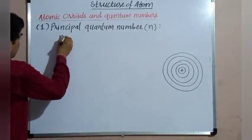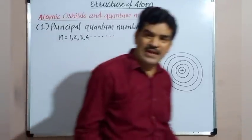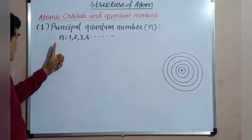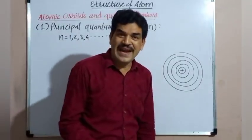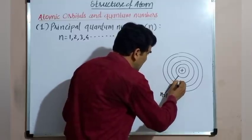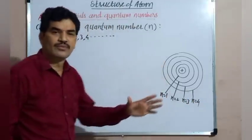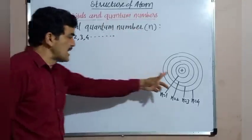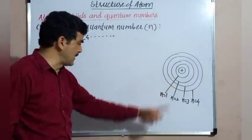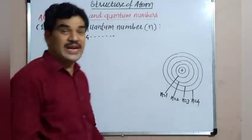The principal quantum number n has integer values: 1, 2, 3, 4, and so on. These are the values of the principal quantum number. When n = 1, that orbit is the first orbit or first shell. For the first shell n = 1, for the second shell n = 2, for the third shell n = 3, for the fourth shell n = 4, and so on. So when we know the value of n, we know the shell number and orbit number to which the electron belongs.